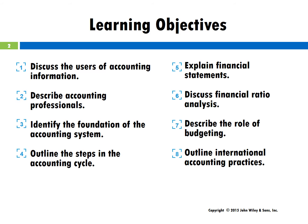The learning objectives for this chapter are: 1. Discuss the users of accounting information. 2. Describe accounting professionals. 3. Identify the foundation of the accounting system. 4. Outline the steps in the accounting cycle. 5. Explain financial statements. 6. Discuss financial ratio analysis.